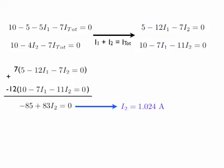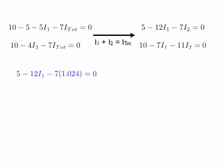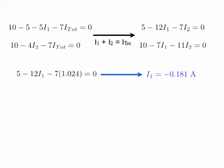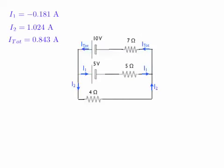I'm now going to plug I2 back into one of my loop equations. Using that top equation, I replace I2 with 1.024 amps and solve for I1. I get a negative value for I1. I defined I_total to be I1 plus I2, so I have a negative I1 value plus a positive I2 value, giving me 0.843 amps for I_total. I2 and I_total were both positive numbers, so the directions I guessed for those were correct.